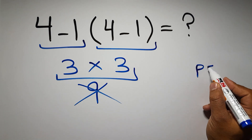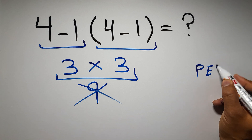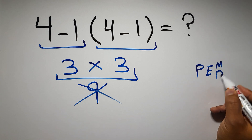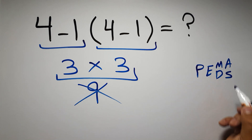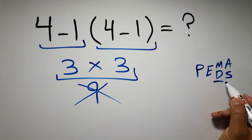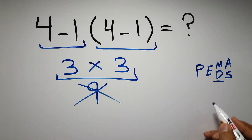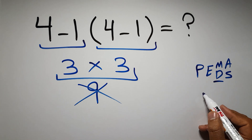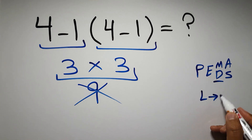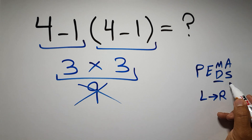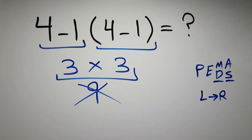We have to do parentheses first, then exponents, then multiplication or division, and finally addition or subtraction. Remember that multiplication and division have equal priority and we work from left to right, and the same applies to addition and subtraction.